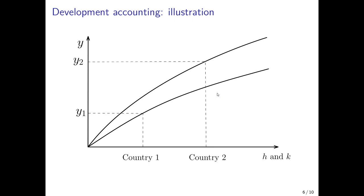In reality, we would face both cross-country differences: the two countries would differ in terms of their productivity and in terms of the levels of production inputs they use. We would have a difference in per capita GDP between the two countries that can be decomposed into differences due to differences in accumulable production factors, and differences that can be explained by differences in productivity. Development accounting is all about disentangling these differences.